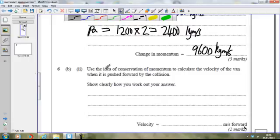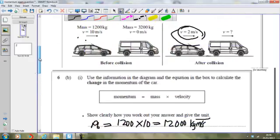Alright, the next part of the question, part 2. Use the idea of the conservation of momentum to calculate the velocity of the van when it's pushed forwards by the collision. So let's have a look at the information again to figure out how we can do this.